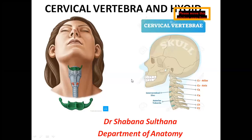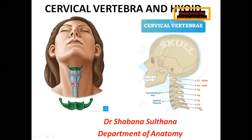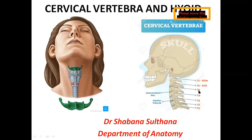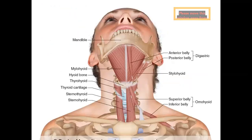We will discuss cervical vertebrae. We have seven cervical vertebrae: the first cervical vertebra is atlas, second is axis, then third, fourth, fifth, sixth — they have the same features, hence they are called typical cervical vertebrae. The seventh cervical vertebra again has some special features. So C1, C2, and C7 come under atypical cervical vertebrae, which have specialized features, whereas C3, C4, C5, C6 have same features and come under typical cervical vertebrae.